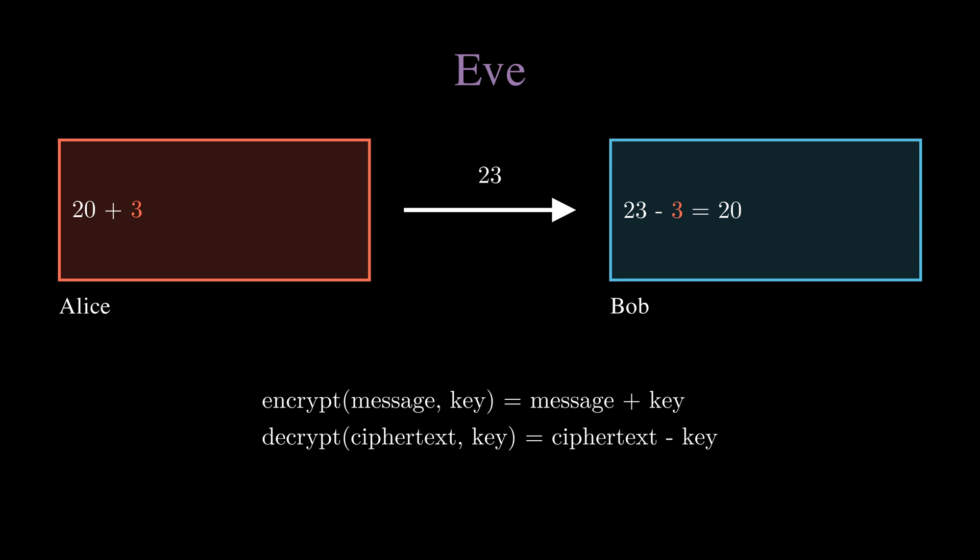This looks obviously insecure, but why exactly? Eve, as someone who only sees 23, will have no idea what Alice's actual age is. Eve can guess the key to be 2, 3, or 4, which will result in outputs 21, 20, and 19, respectively. These are all equally valid ages.